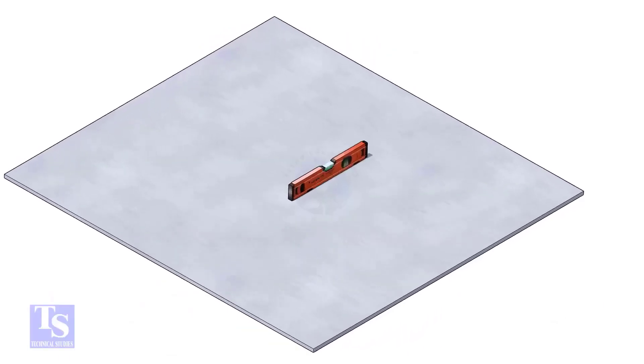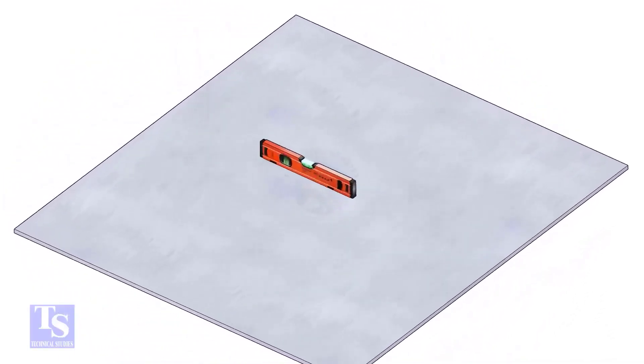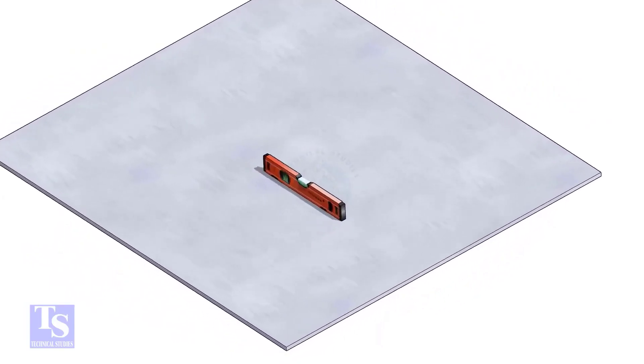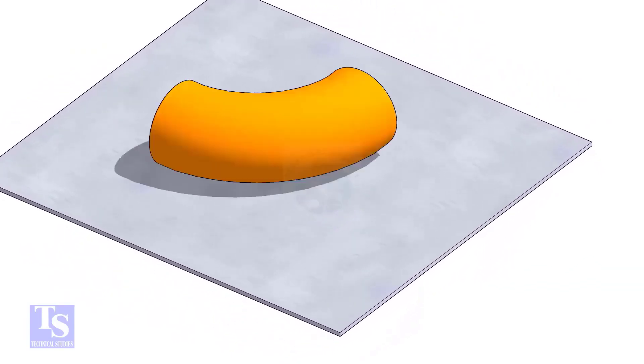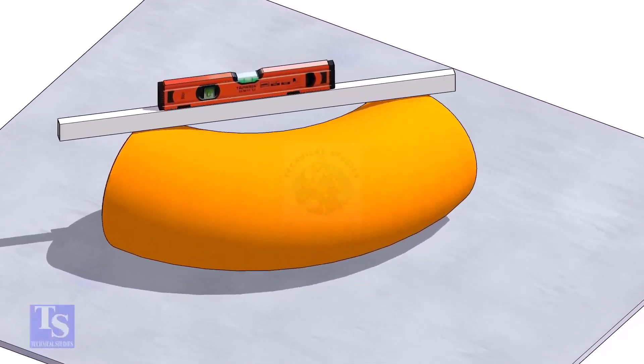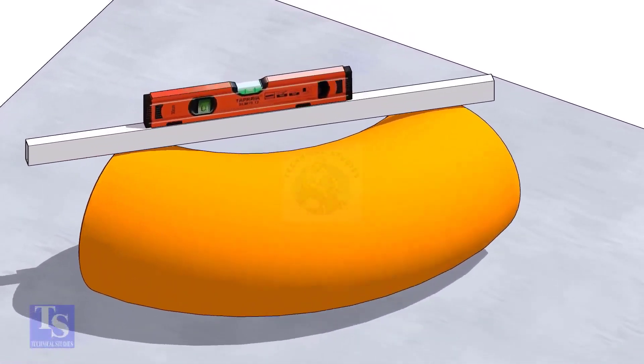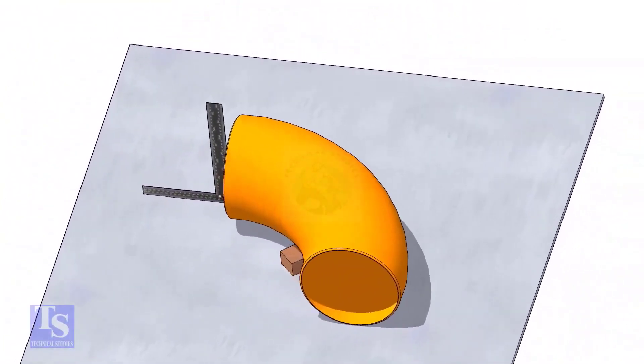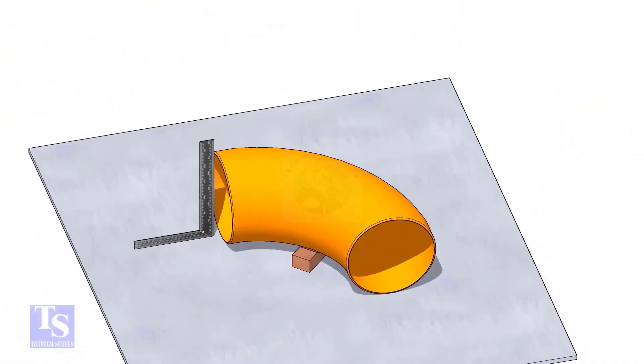Let us mark the center of the elbow. Choose a leveled plate and put the elbow on it. Check the level of the elbow. Check the squareness of the face of the elbow with the plate. If necessary, put some packing below as shown.